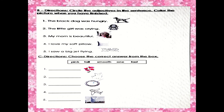Here is adjectives. Remember adjectives. You are going to circle the adjectives — circle the adjective in each sentence. Are you ready? Let's start. I will read the sentence and you're going to circle the adjective. Question number one: The black dog was hungry. The black dog was hungry.